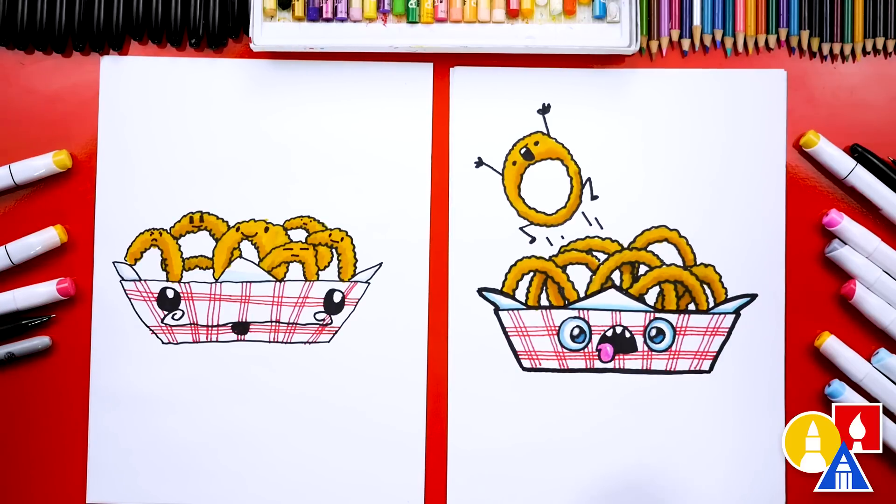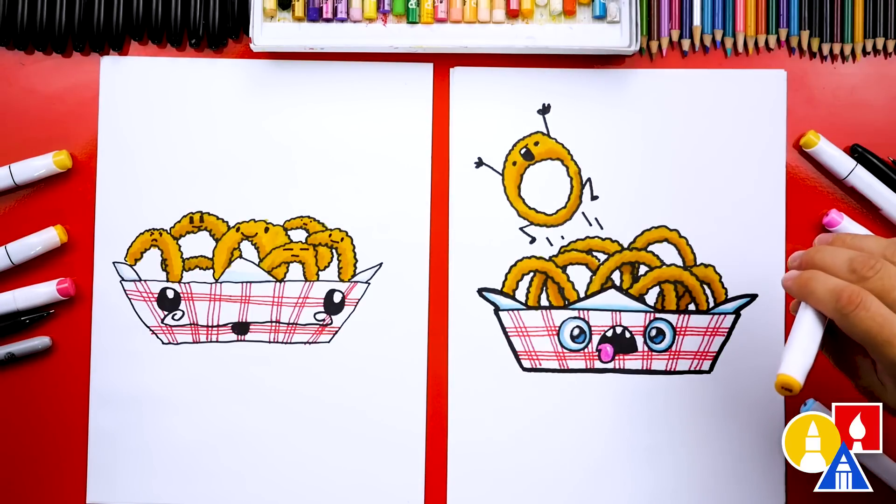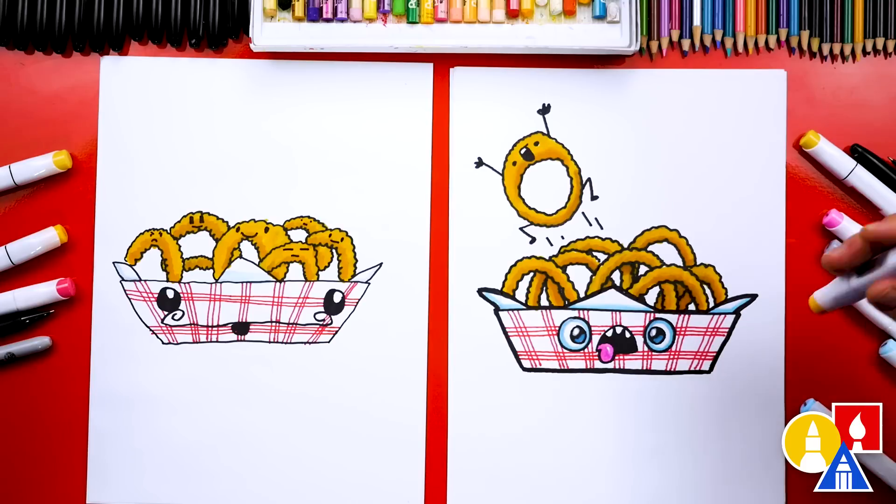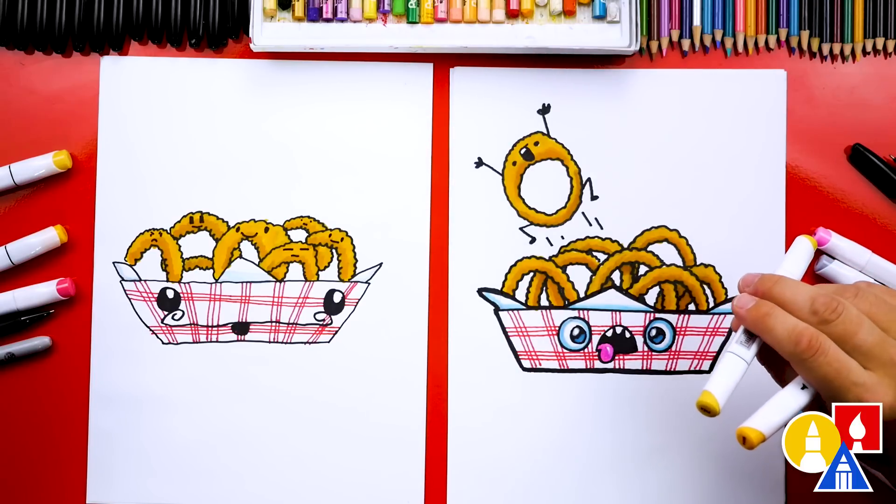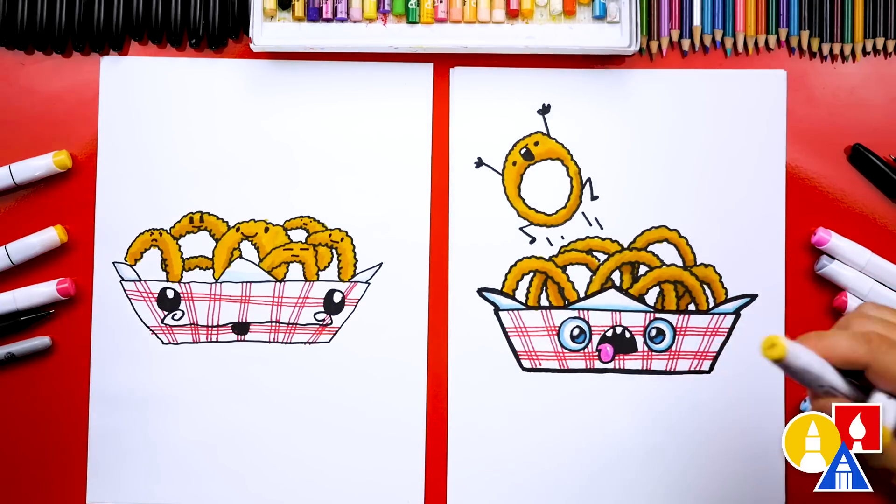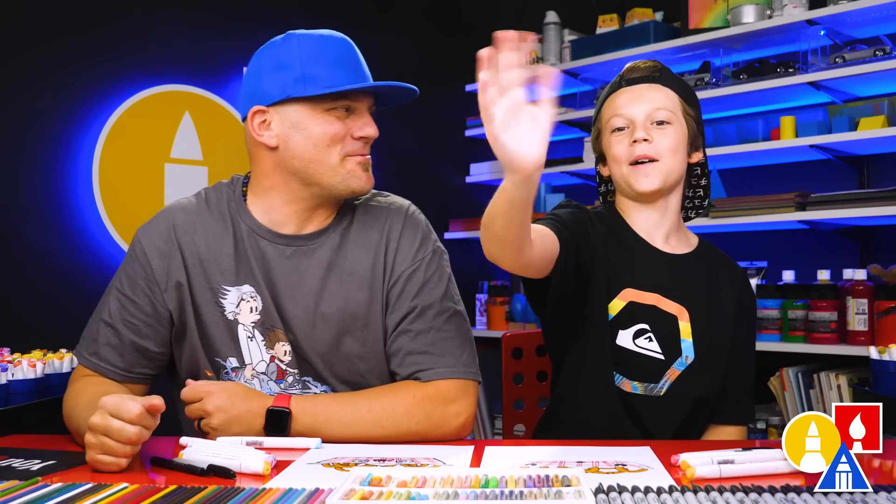You can pause the video right now to match our same coloring. We used our biannual markers. Or you can use colored pencils or crayons. Oh, yeah. If you have the same set that we have, we used Y416. This is a darker kind of brown color that we use for the shading. But the main onion ring color is Y314. Yeah. We hope you had a lot of fun drawing your funny onion rings. We do. We hope you had a lot of fun. And we'll see you later, our friends. Goodbye. Bye-bye.